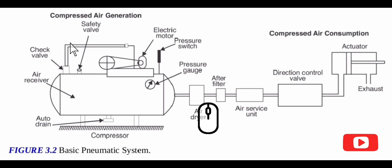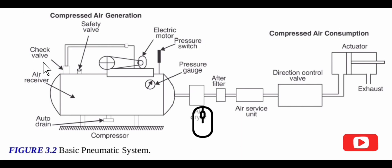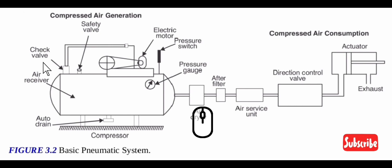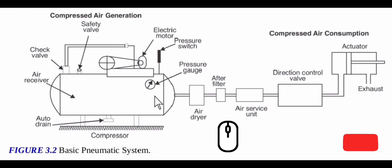7. Check valve: The valve that enables flow in one direction and blocks flow in a counter direction is called a check valve. Once compressed air enters the receiver via the check valve, it is not allowed to go back even when the compressor is stopped. 8. Pressure gauge: The pressure gauge tells us the pressure inside the receiver.